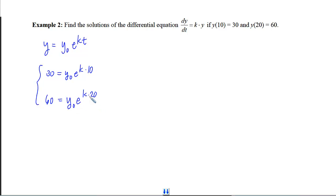So now we need to solve the system. That means we either isolate k and plug it in here, or we isolate y initial and plug it in. And personally, I think isolating y initial is going to be simpler. So that would be 30 over e to the 10k.